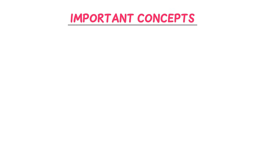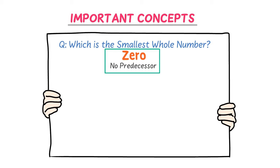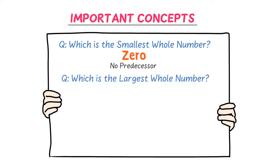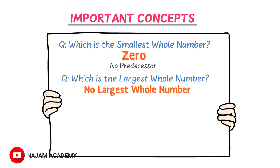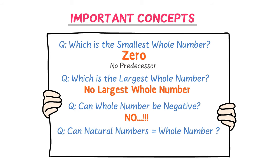Let me teach you some important concepts of whole numbers. Which is the smallest whole number? 0 is the smallest whole number — there is no predecessor or a number that comes before 0. Which is the largest whole number? There is no largest whole number. Can whole numbers be negative? No, whole numbers cannot be negative. Can natural numbers be considered as whole numbers? Yes — all natural numbers are also whole numbers, but not all whole numbers are considered natural numbers.